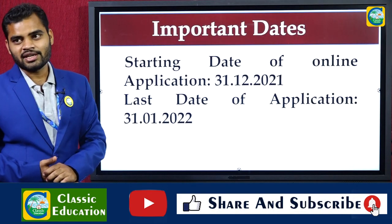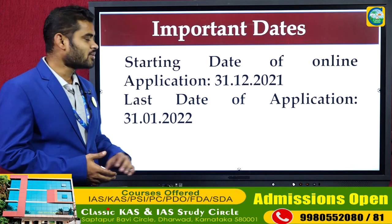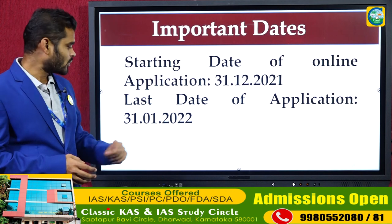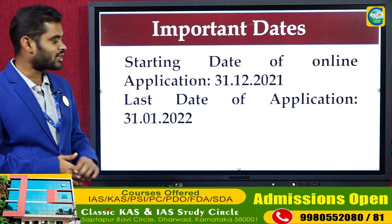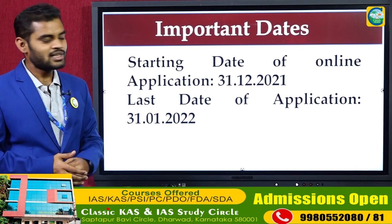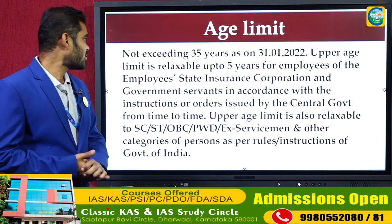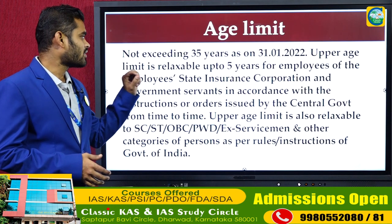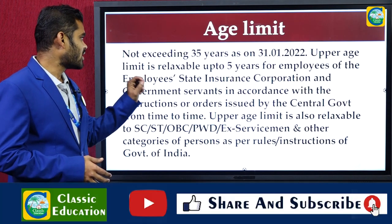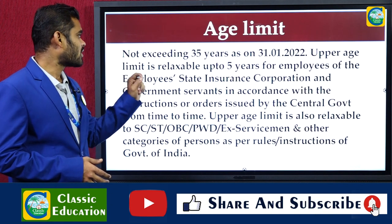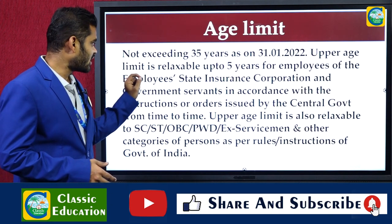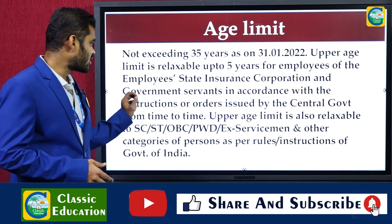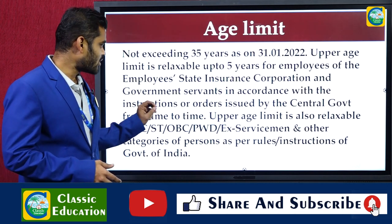So, important dates. Age limit is not exceeding 35 years as on 31st January 2022. Upper age limit is relaxable up to 5 years for employees of the Employees State Insurance Corporation and Government Servants in accordance with instructions or orders issued by the Central Government from time to time.